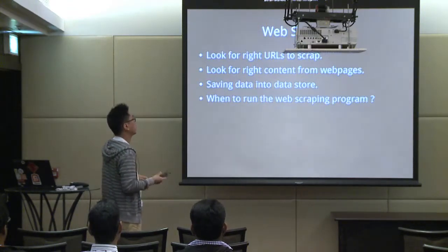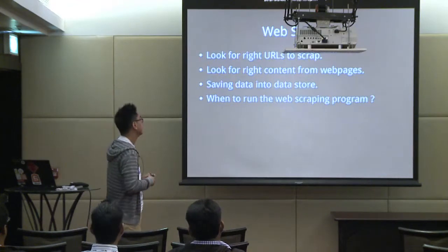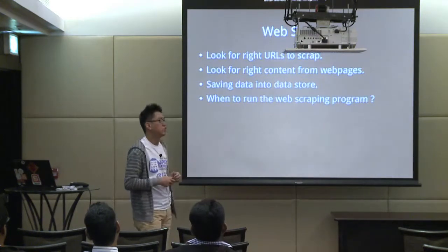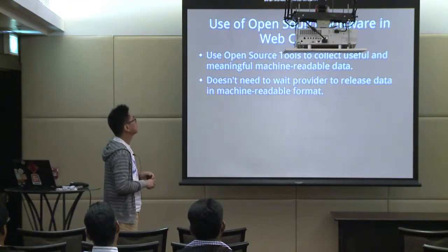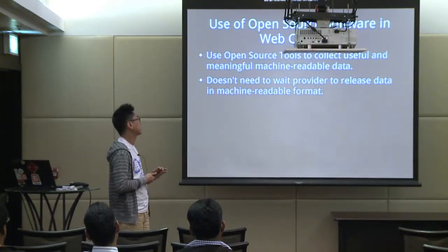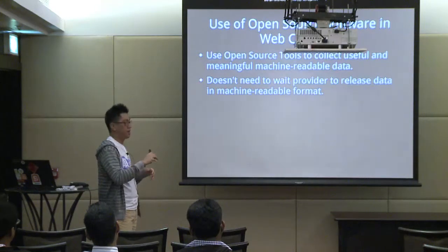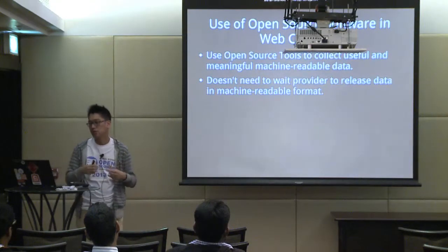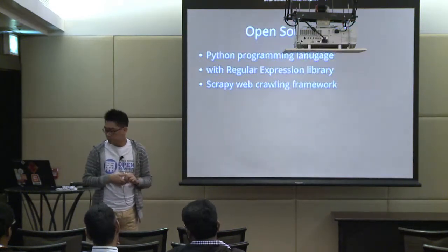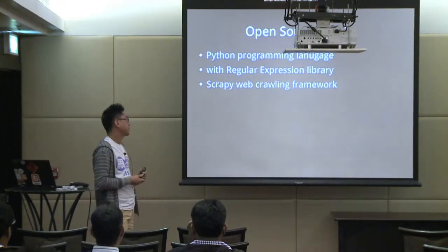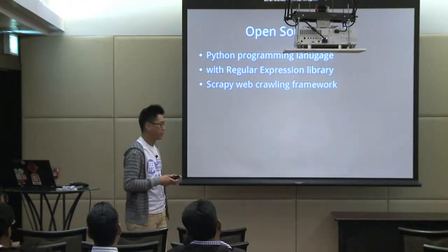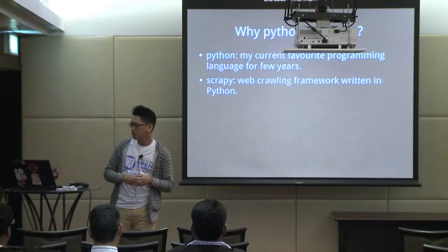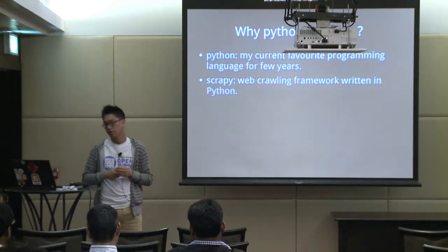In web scraping, we look for the right URL and the right content from the website, and save the data into a data store. We should also consider when to run the web scraping program. I use some open source tools to collect meaningful data and produce it in machine-readable format, rather than waiting for data providers to release data in a good machine-readable format. I use Python with the regular expression library, and also Scrapy, which is written in Python. I use Python and Scrapy because Python is my favorite language and Scrapy is a quite powerful web scraping framework.